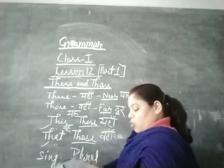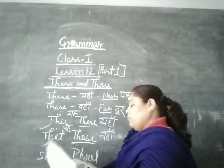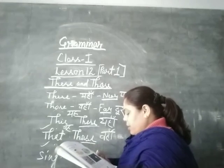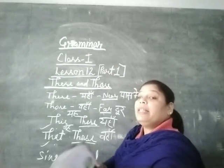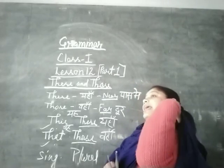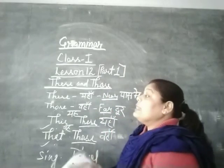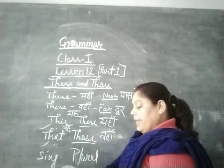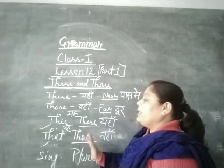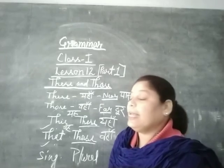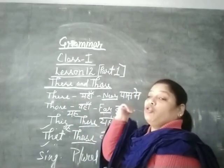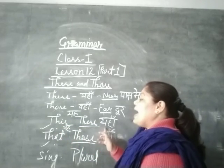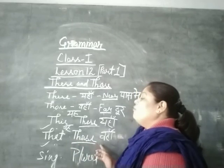These and those are used for many things or many people. You can use your notebook and learn it properly. These means here and those means there. This means here, these means here, that means there and those means there.